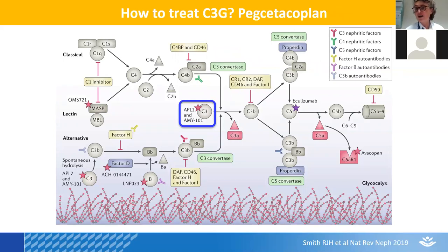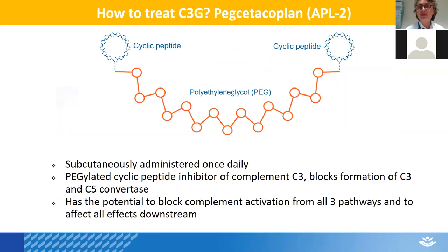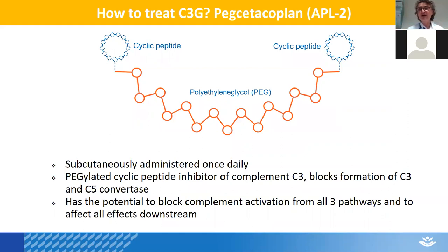Another agent, pegcetacoplan, is subcutaneously administered once a day and is a cyclic peptide inhibitor of C3. It blocks directly the formation of both the C3 and the C5 convertase, so it is a very powerful complement inhibitor with the potential to be extremely effective in patients in which this form of complement dysregulation is present. A larger trial enrolling both adults and children is going to be started very shortly — within weeks.